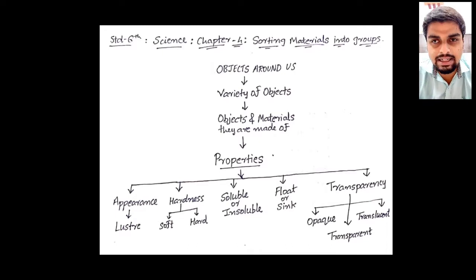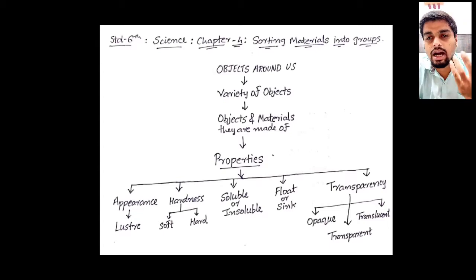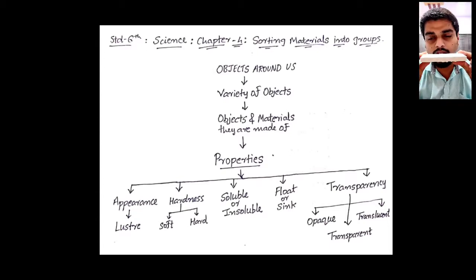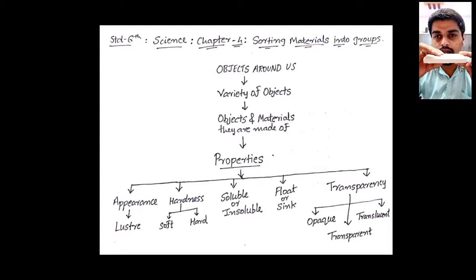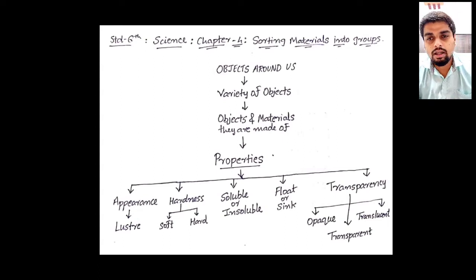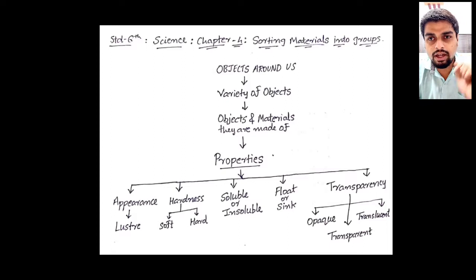The second property is hardness — how hard or soft a material is. For example, this remote is hard, but if I talk about cotton or rubber, that rubber is soft in nature.